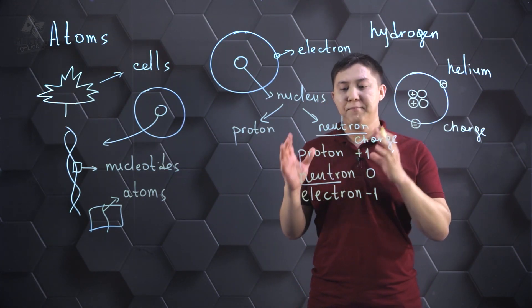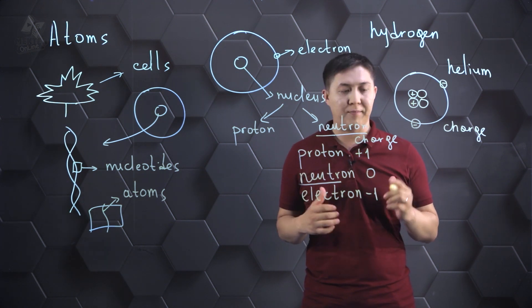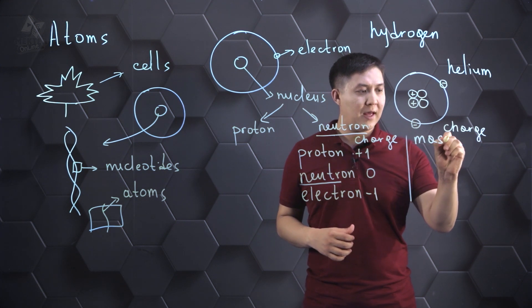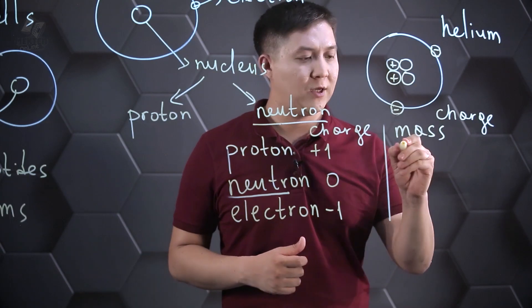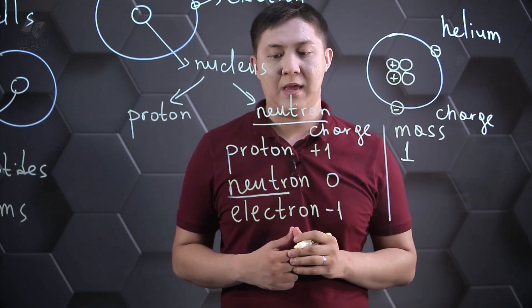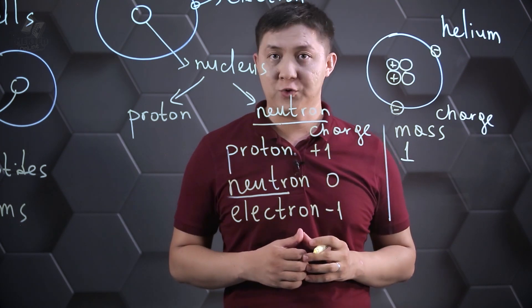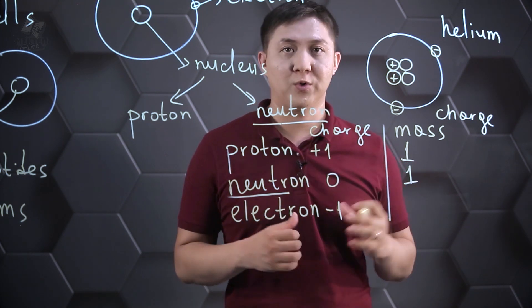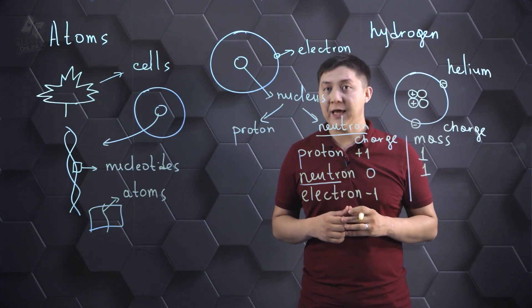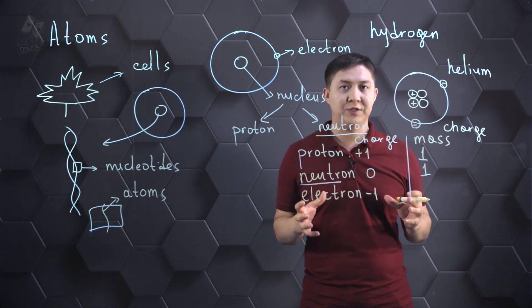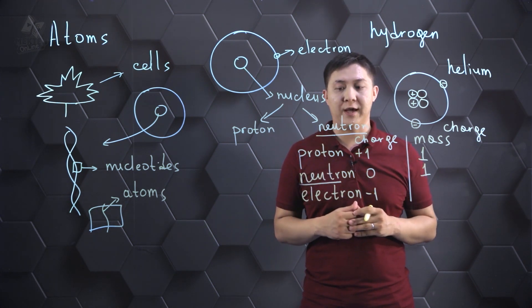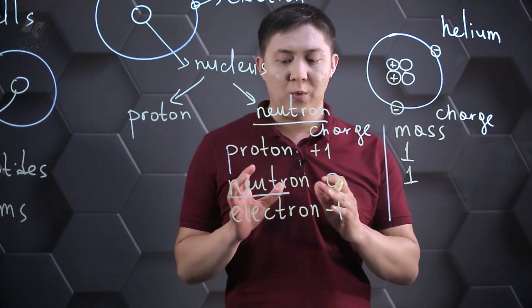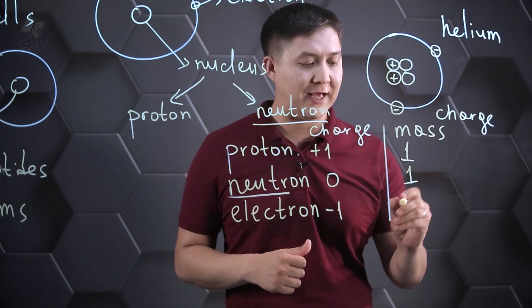Okay, now let's compare the relative masses of these subatomic particles. Relative mass of proton is one. And relative mass of neutron is the same as the mass of proton. So, it is also equal to one. Relative mass of electron is very small. It's 2000 times smaller than the mass of proton. So, sometimes we consider the mass of electron as zero.